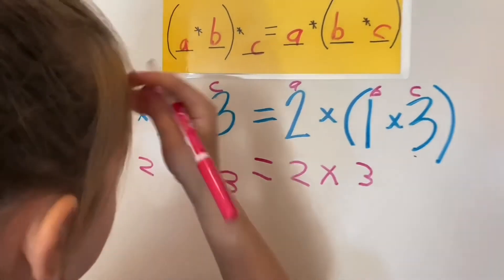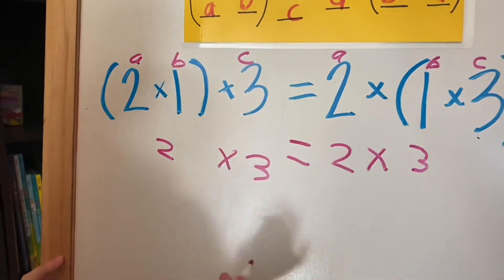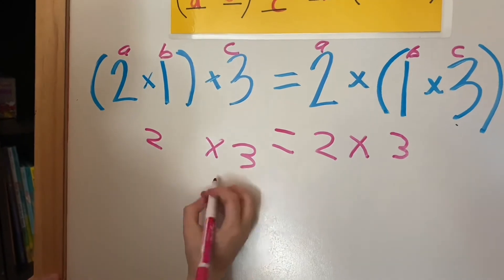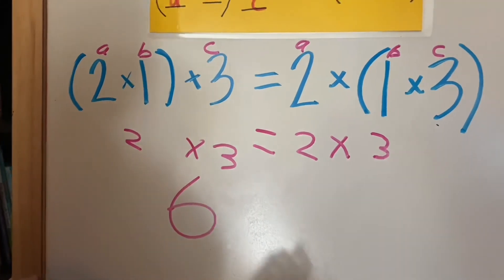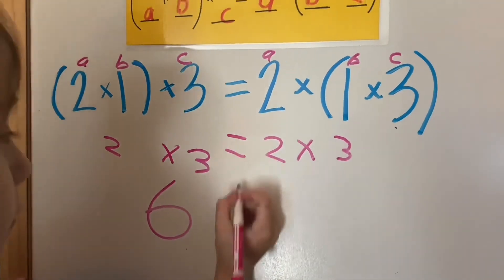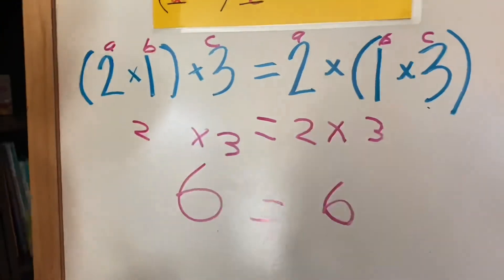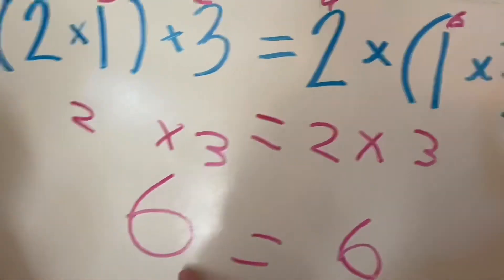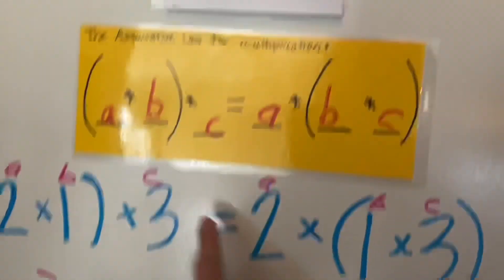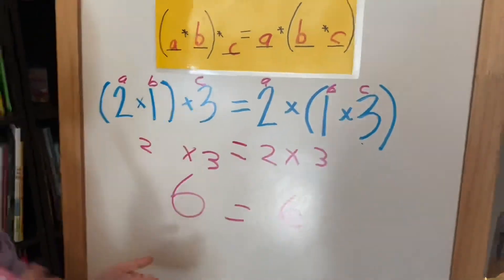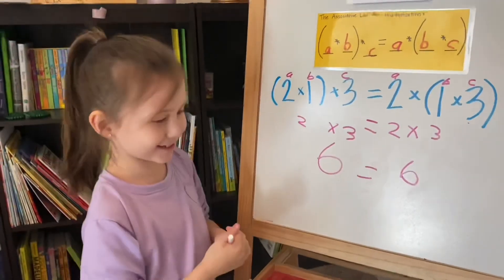Now let's solve. What is 2 times 3? 6, very good. Bring down that equals sign. What is 2 times 3? The same thing that's over here has to equal the same thing that's over there. That's what this is saying too. This is our law. Is our law correct? Yes, two thumbs up.